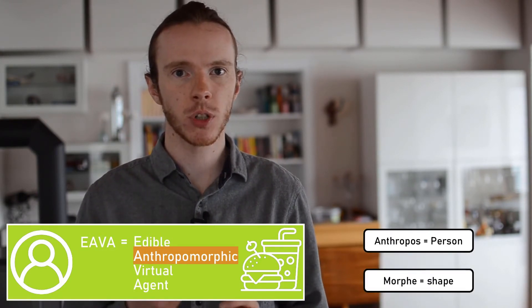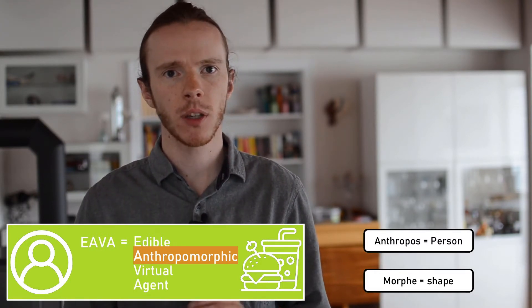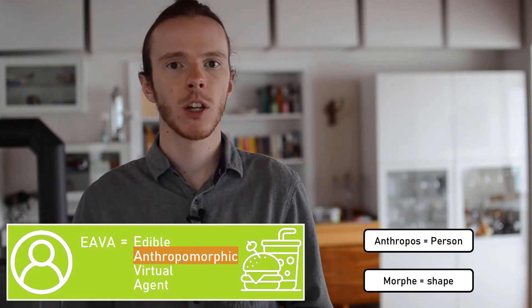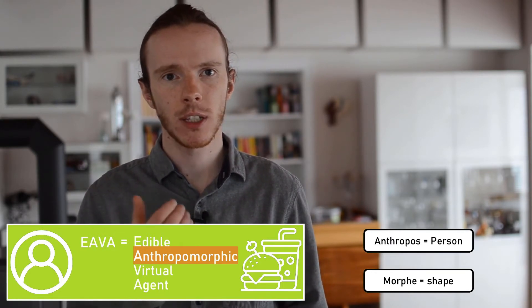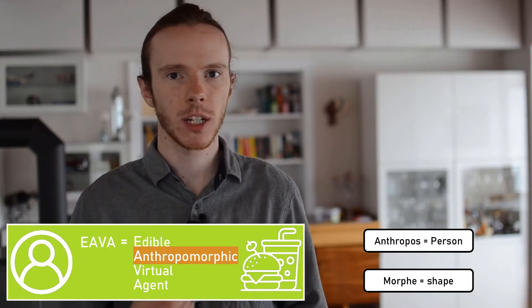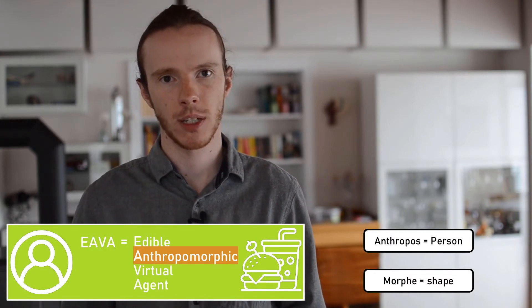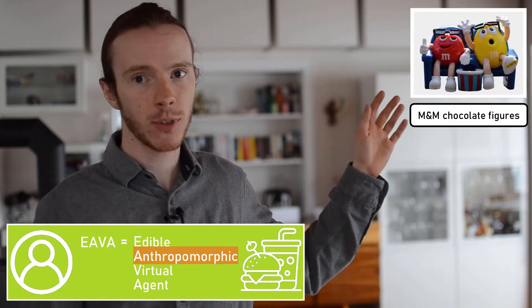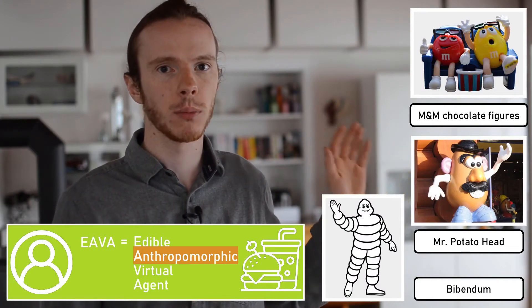This describes the attribution of human traits such as emotions, appearance and intentions to something non-human. It is important to emphasize that everybody has a different tendency to anthropomorphize things and there are certain fields such as marketing that explicitly try to increase empathy by incorporating anthropomorphic traits into their products. Well known examples of this are M&M chocolate figures, Mr. Potato Head and Bibendum or also known as Michelin Man.